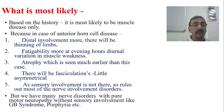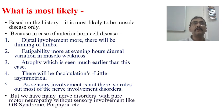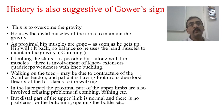One more caveat: there are many nerve disorders with pure motor neuropathy without sensory involvement, such as GB syndrome, demyelinating neuropathies, and porphyria — a metabolic problem. These conditions involve motor neuropathy with nerve involvement. Additionally, the history is also suggestive of Gower's sign, which will be discussed in the next slide. Thank you very much.